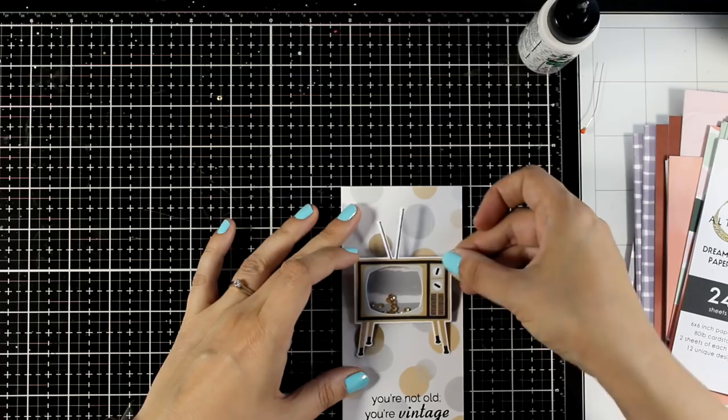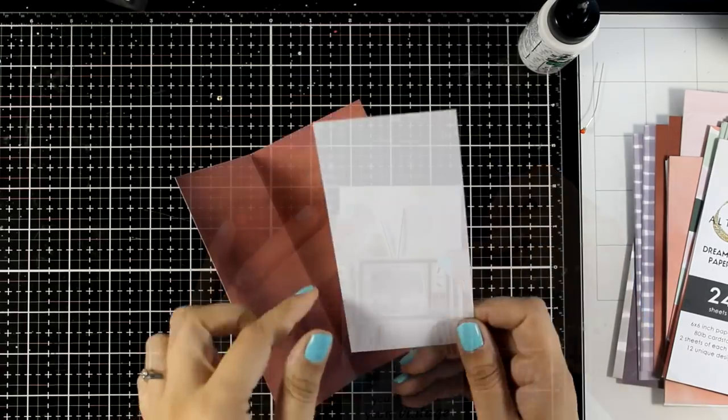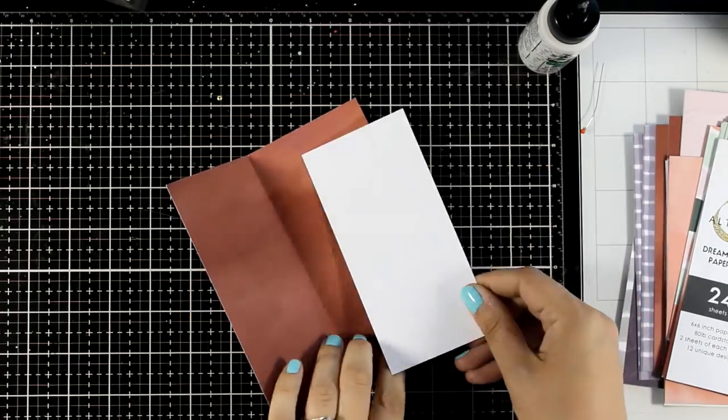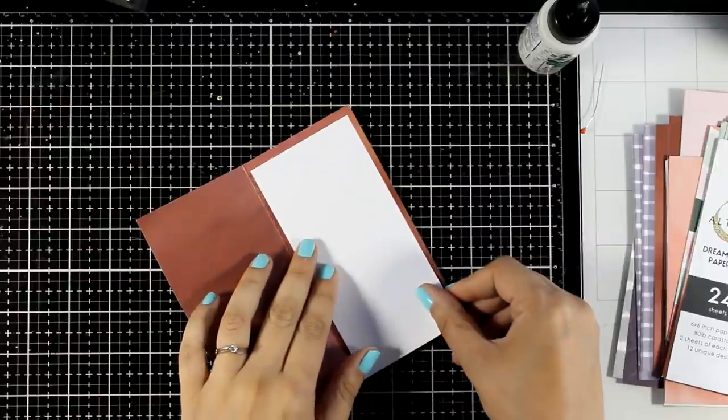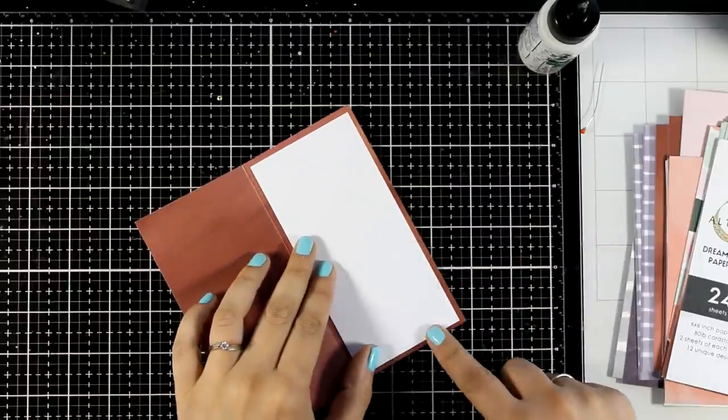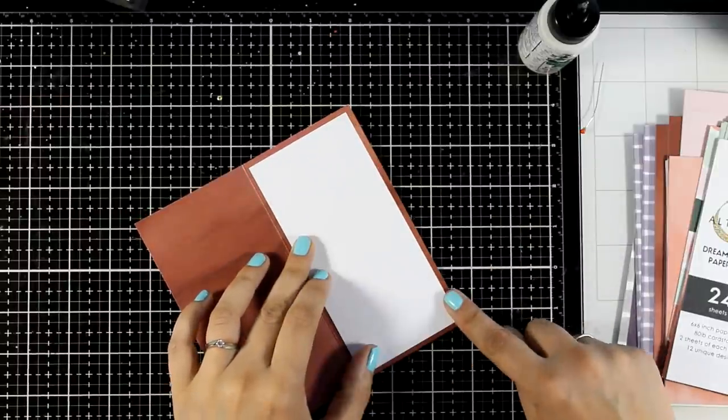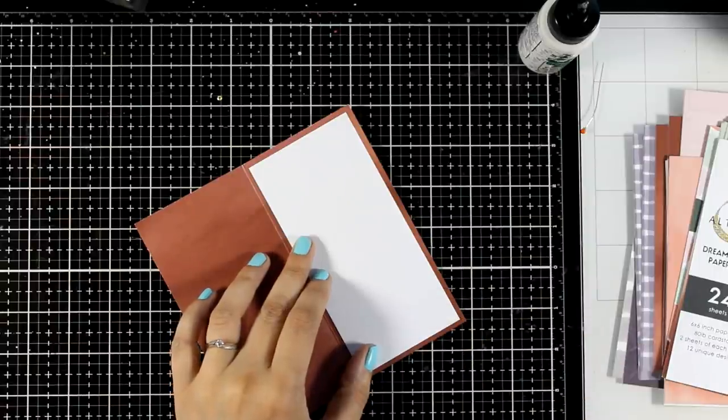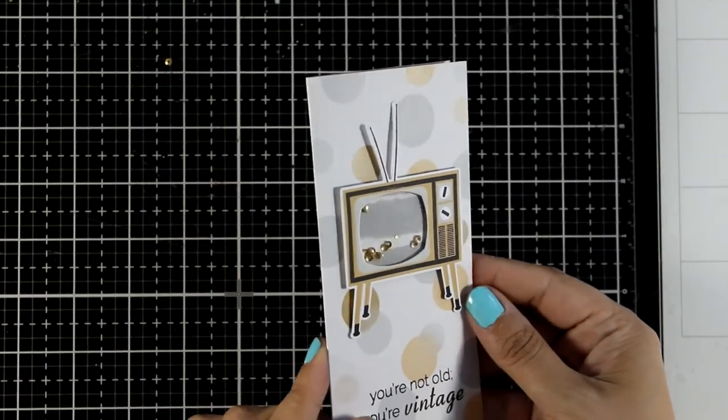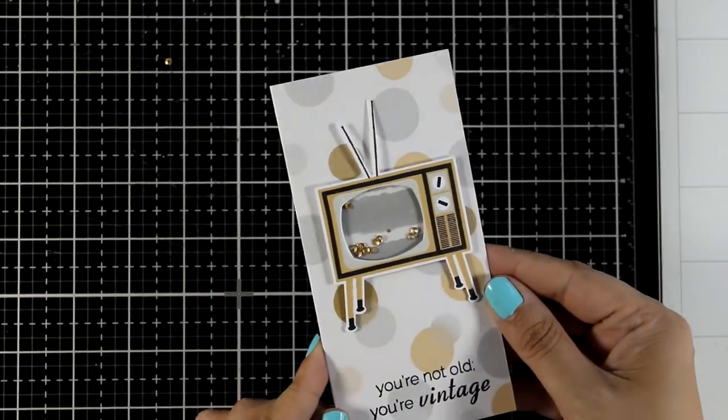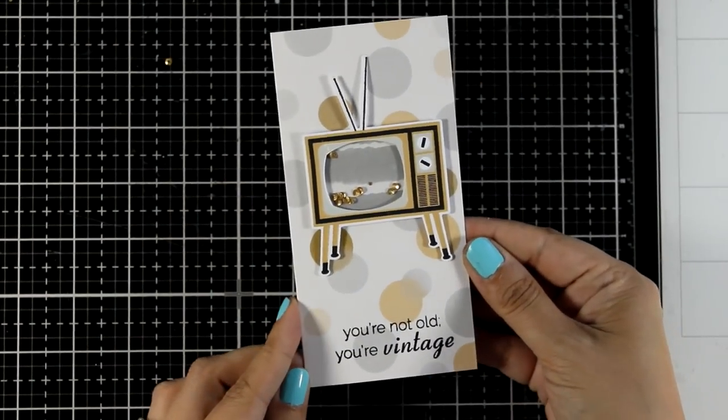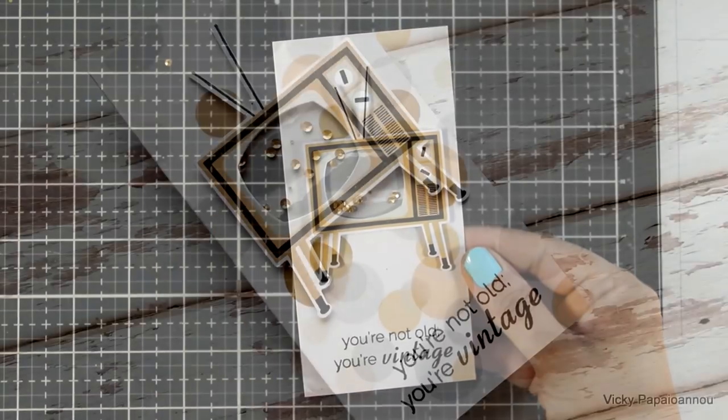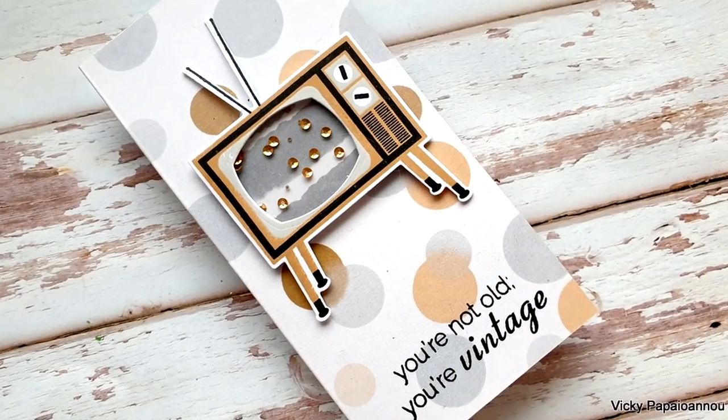I am going to stick my vintage TV set on top. And on the inside you can just stick a panel of white cardstock so you have a place to write your message. The fun part about using a pattern paper as your card base is that you end up having a design at the front, at the back as well as on the inside. It provides a great way to use up those pattern papers that you are hoarding.